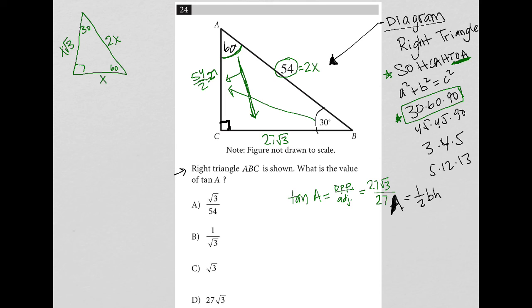When I simplify that, the 27s cancel out, and I'm just left with a square root 3 remaining.